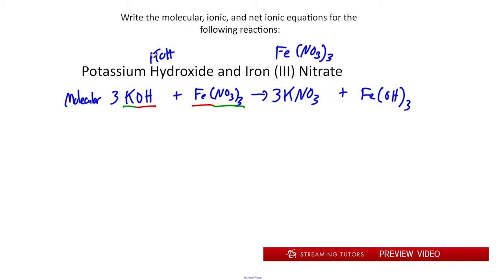What we do now is see which species are soluble and which are insoluble. KOH is our strong base, so that's a soluble species. Nitrate salts are always soluble, so Fe(NO3)3 is soluble as well. KNO3 is soluble. And Fe(OH)3 is one of our hydroxide salts that's insoluble, so this is going to be our precipitate here. We'll denote that with an S in parentheses.